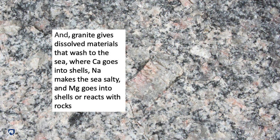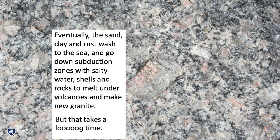The calcium that washes to the sea goes into shells, the sodium makes the sea salty, and the magnesium may go into shells or react with rocks. Eventually, the soil — the sand, clay, and rust — washes to the sea and goes down subduction zones with the salty water, shells, and rocks to melt under volcanoes and make new granite. But that takes a very long time — at least many millions of years, and maybe hundreds of millions of years or longer.